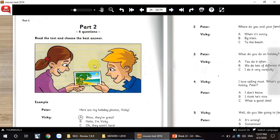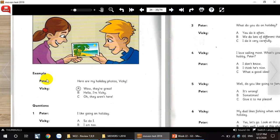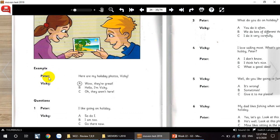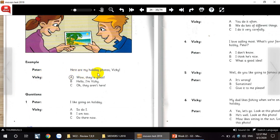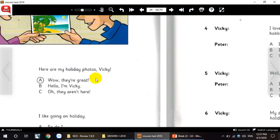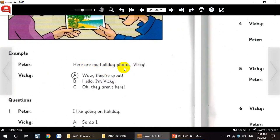Part 2. Read the text and choose the best answer. First, let's take a look at the pictures. And look at this example here. We have two characters. First, Peter and Vicky. Peter, here are my holiday photos, Vicky. We have three choices: A, B, or C.